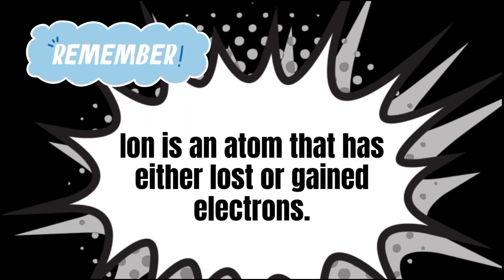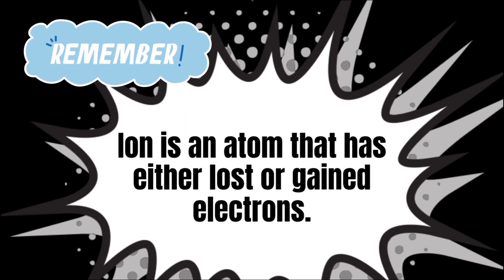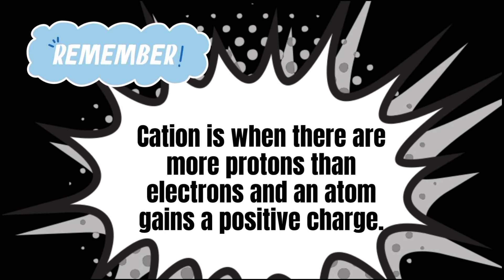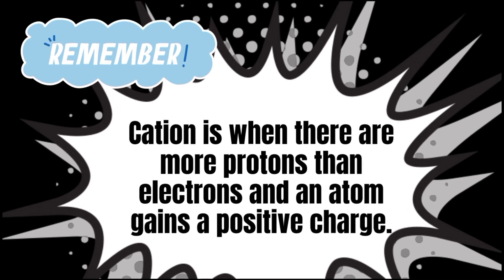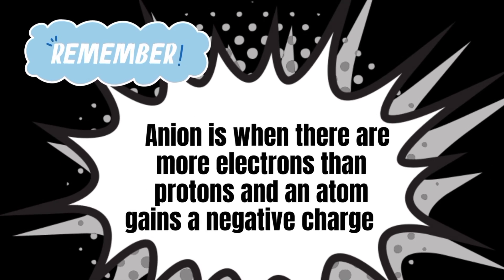Let's summarize our lesson. An ion is an atom or group of atoms that has a charge. They get a charge when the number of protons and electrons don't balance out. More protons than electrons gives you a positively charged ion known as a cation. More electrons than protons gives you a negatively charged ion known as an anion.